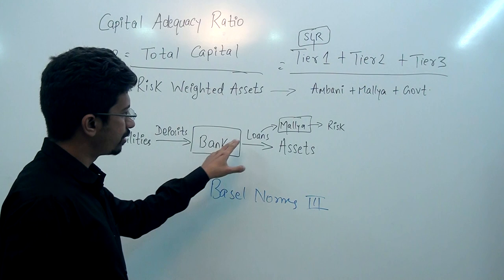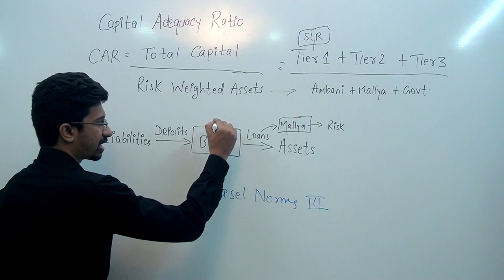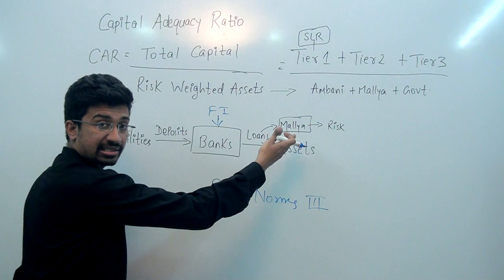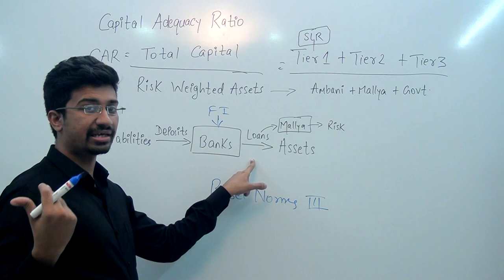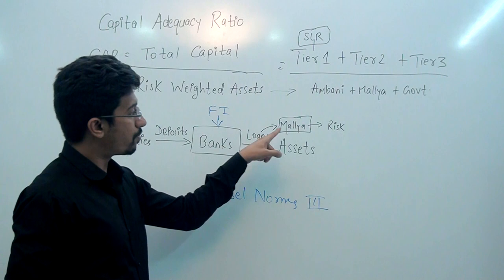Now think carefully — the loans that banks give out, whose money are they using? We know banks are financial intermediaries. They take our money and give it to others. Suppose a bank makes a mistake and gives money to Mallya instead of Ambani — that becomes a risk on our money. If Mallya takes the money and runs away, who will return the money to us?